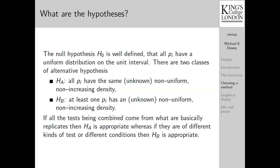However, there are two classes of alternative hypothesis. One, that all of the p_i have the same unknown, non-uniform, non-increasing density. And the second, that at least one, possibly more, has an unknown, non-uniform, non-increasing density. If all of the tests being combined come from what are basically replicates, then the first one of these is appropriate. If they're different kinds of tests or different conditions, then the second is appropriate. It's also appropriate when you imagine that the signal in the data will only be located in one or two of the primary studies which you are combining.